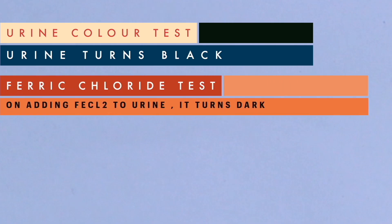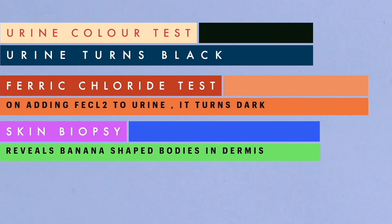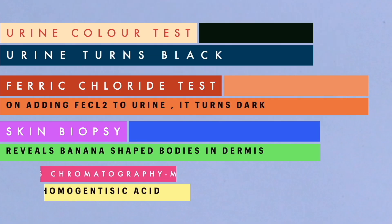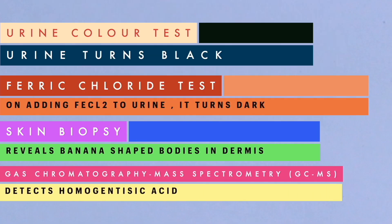For diagnosis: the first traditional test is leaving urine standing — if it turns black or dark, it is positive for alkaptonuria. Second is the ferric chloride test — adding ferric chloride to urine turns it black in affected individuals. Third is skin biopsy, which can diagnose alkaptonuria by revealing yellow-brown pigmented bodies in the dermis — banana-shaped yellow-brown deposits are a classical histological finding, also known as endogenous ochronosis.